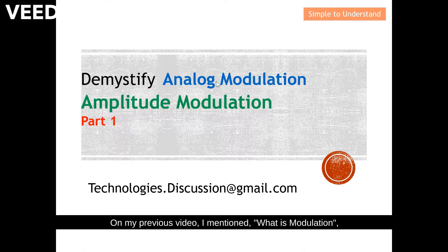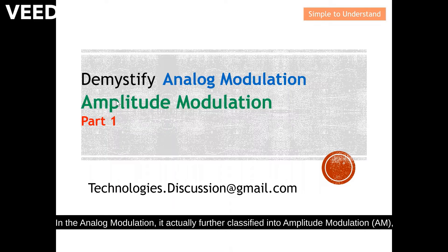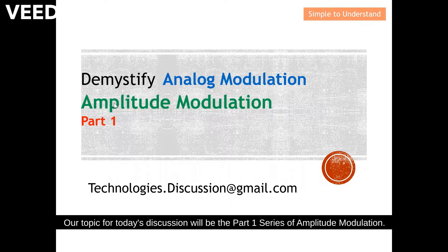On my previous video, I mentioned what is modulation, why we need modulation, and the two types of modulation. Today we are going to discuss the first type of modulation, which is analog modulation. Analog modulation is further classified into amplitude modulation, frequency modulation, and phase modulation. Our topic for today's discussion will be the part 1 series of amplitude modulation.